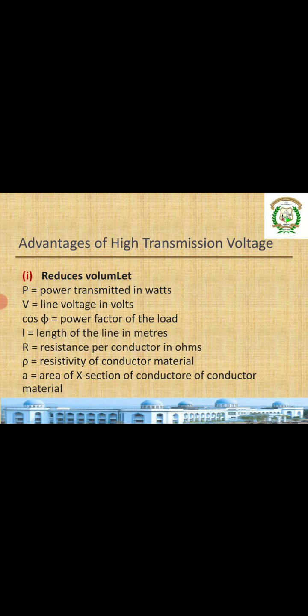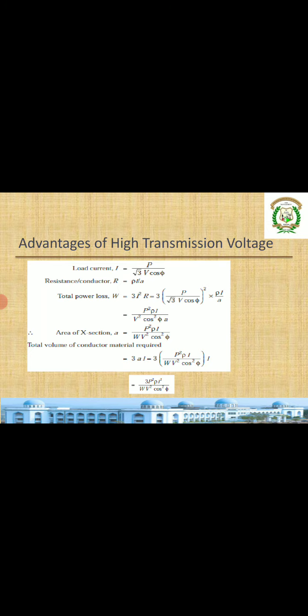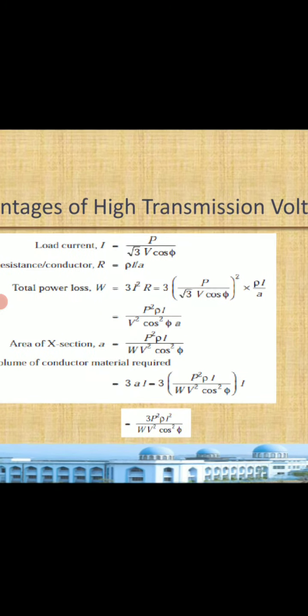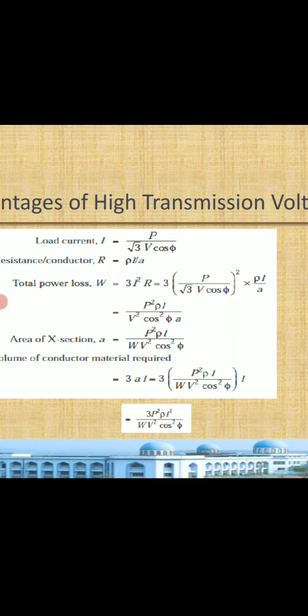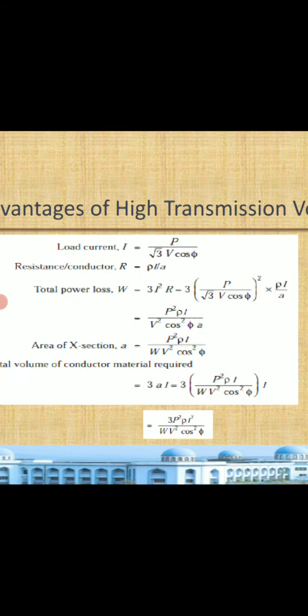Let P be the power transmitted, V be the line voltage in volts, power factor is cos phi, L is the length of the line in meters, R is the resistance per conductor in ohms, rho is the resistivity of the conducting material, and A is the area of cross section of the conductor. We know that power P equals root 3 times V times I times cos phi in the three-phase system, so I equals P divided by root 3 V cos phi.